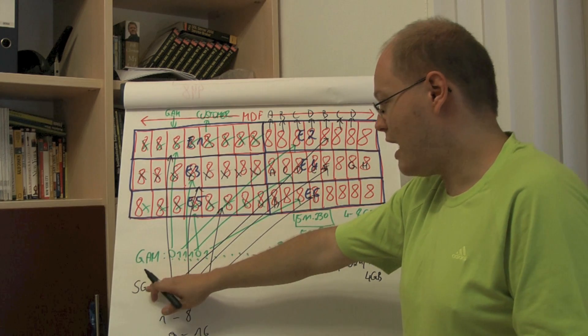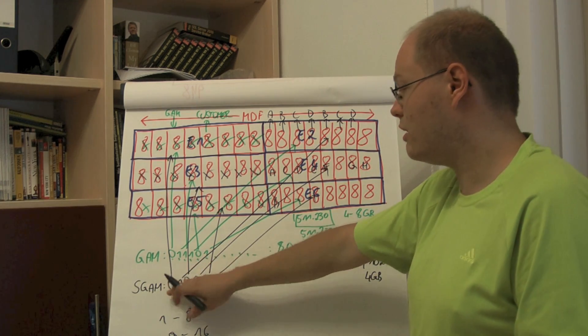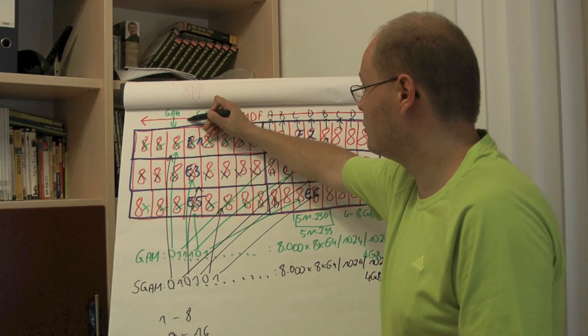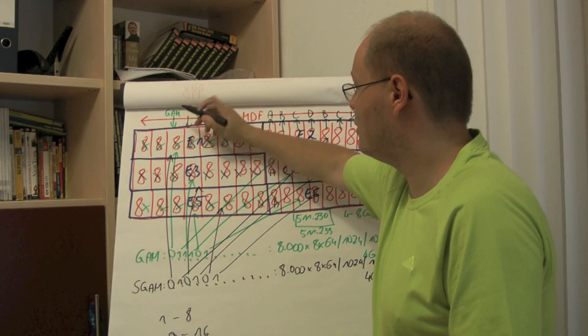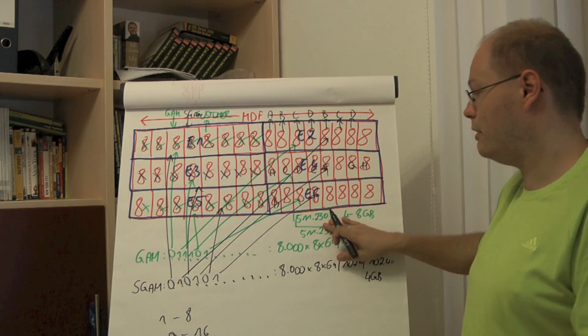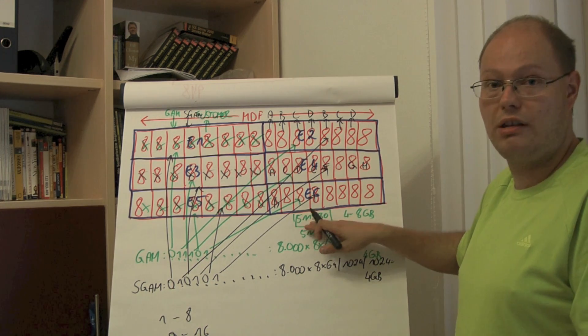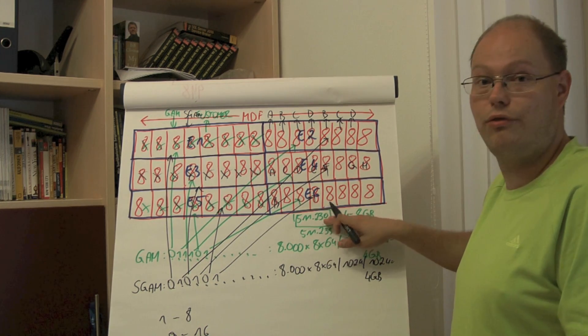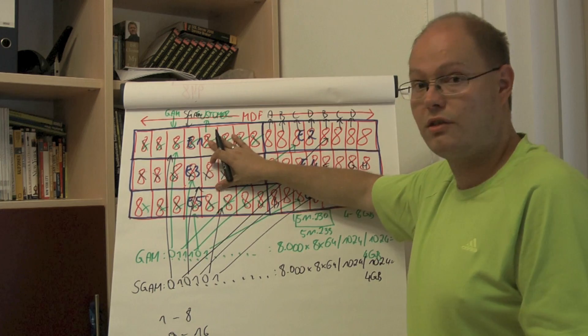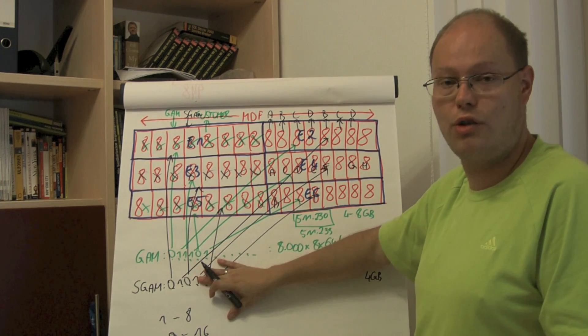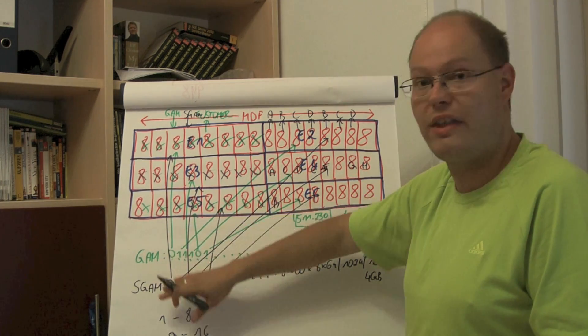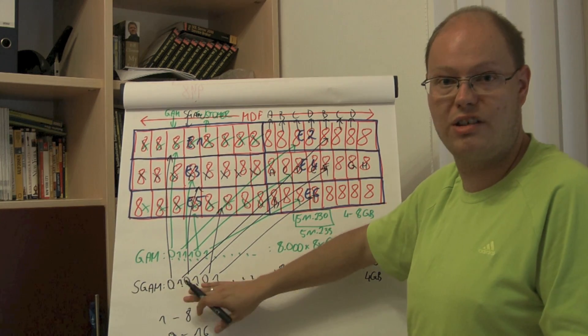And as I have said, SGAM page also comes regularly inside our database file. So the SGAM page comes here, at the beginning on the fourth page, and then again, regularly, after 511,230 pages. So after that introduction to our extents, a GAM and SGAM page, we will now switch to SQL Server Management Studio, and I will show you how a GAM and SGAM page looks like within SQL Server.